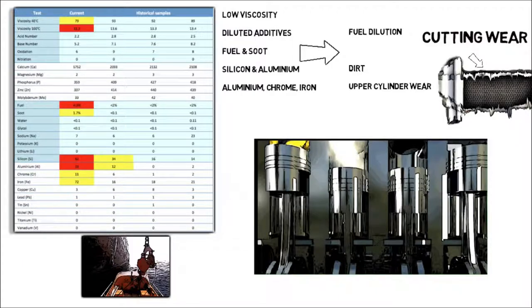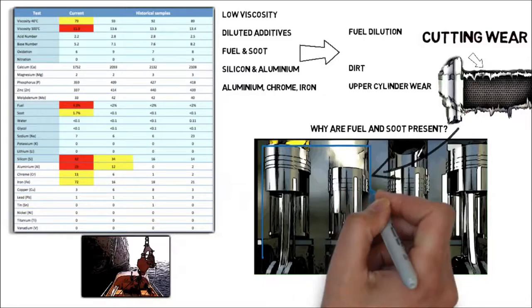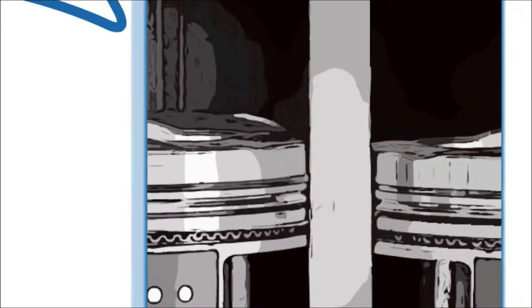So the next question is why are fuel and soot both present? Let's take a closer look. So we add dirt to the upper cylinder space. If you take a piece and rub it back and forth between the piston and liner. The seal separating the upper and lower cylinders is lost by cutting wear.